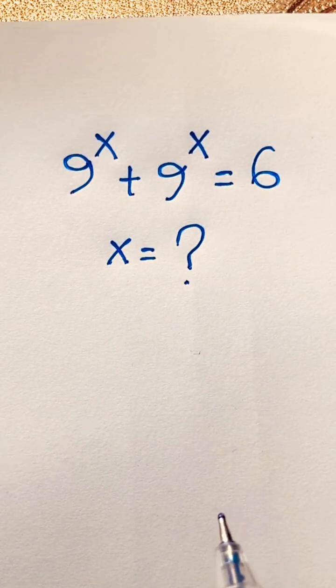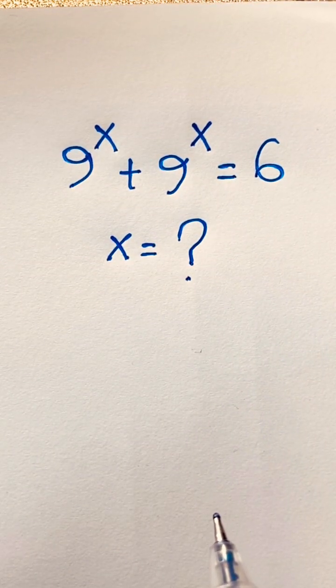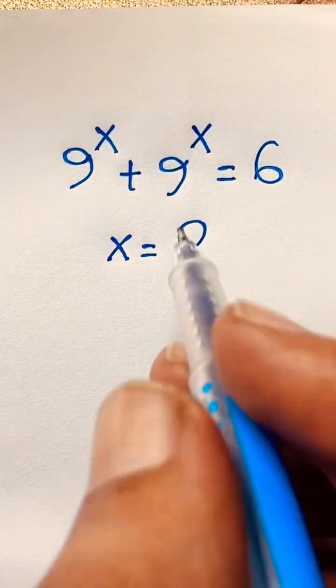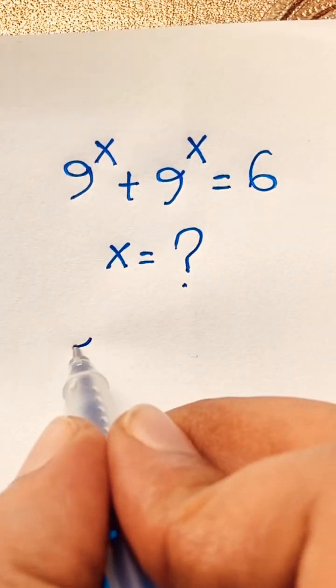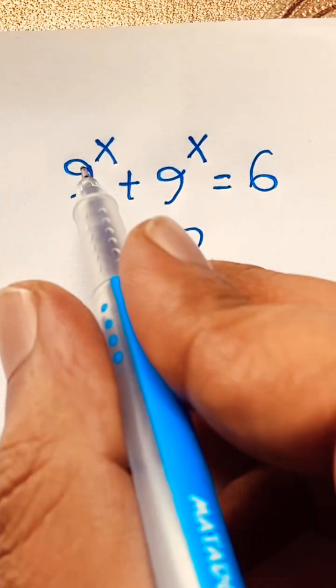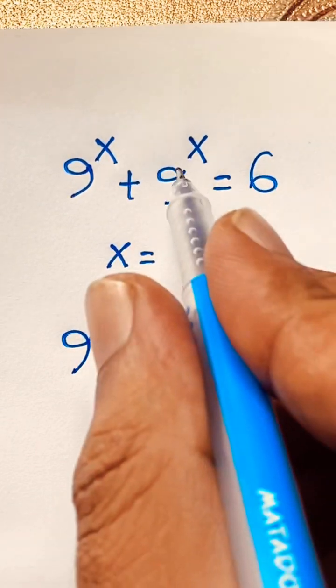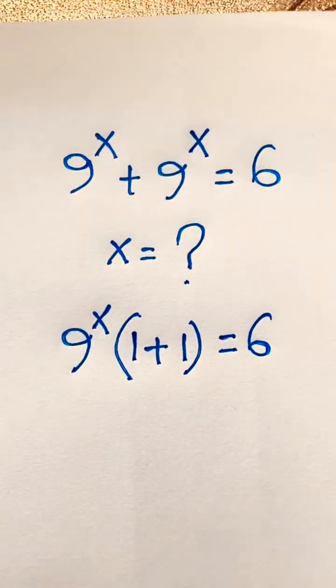9 to the power x plus 9 to the power x equals 6. What is x? How to solve this exponential math problem? You can see easily that 9 to the power x is common, so we can factor it out: 1 plus 1 equals 2.